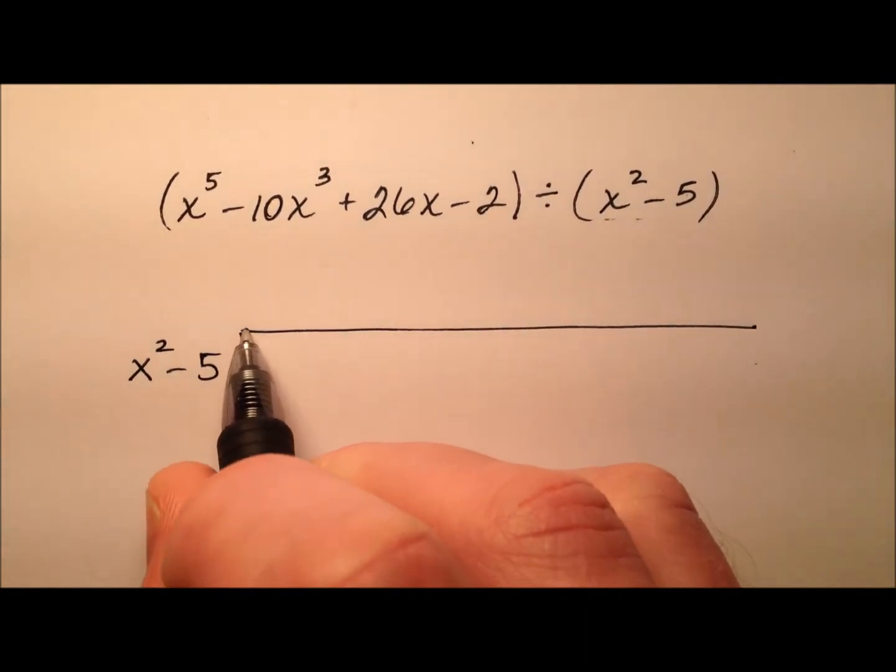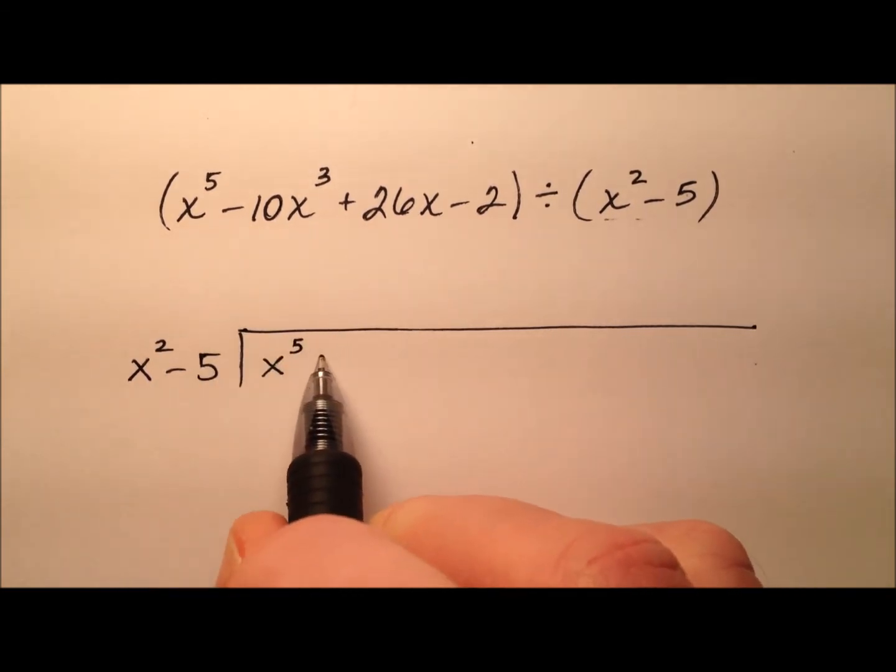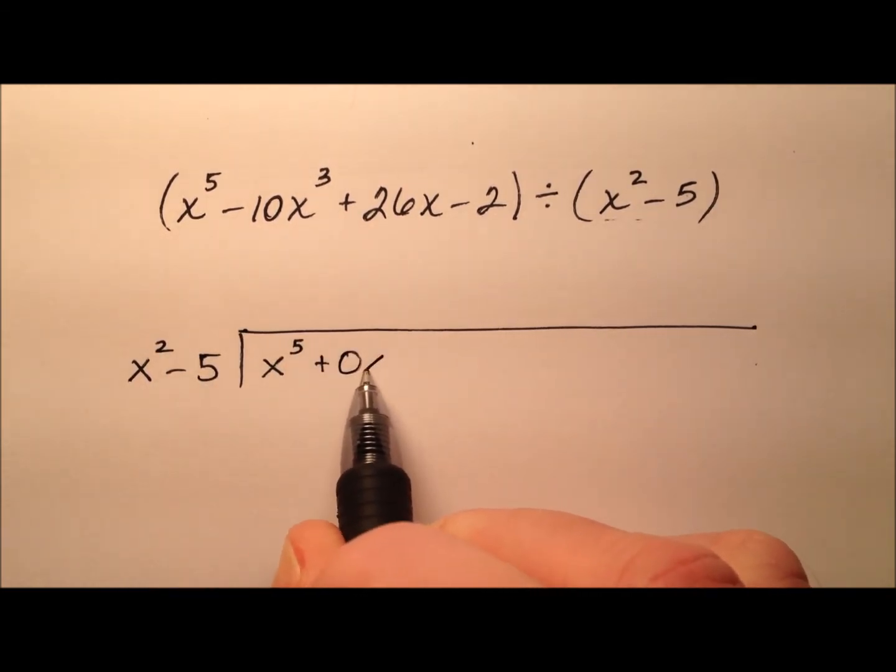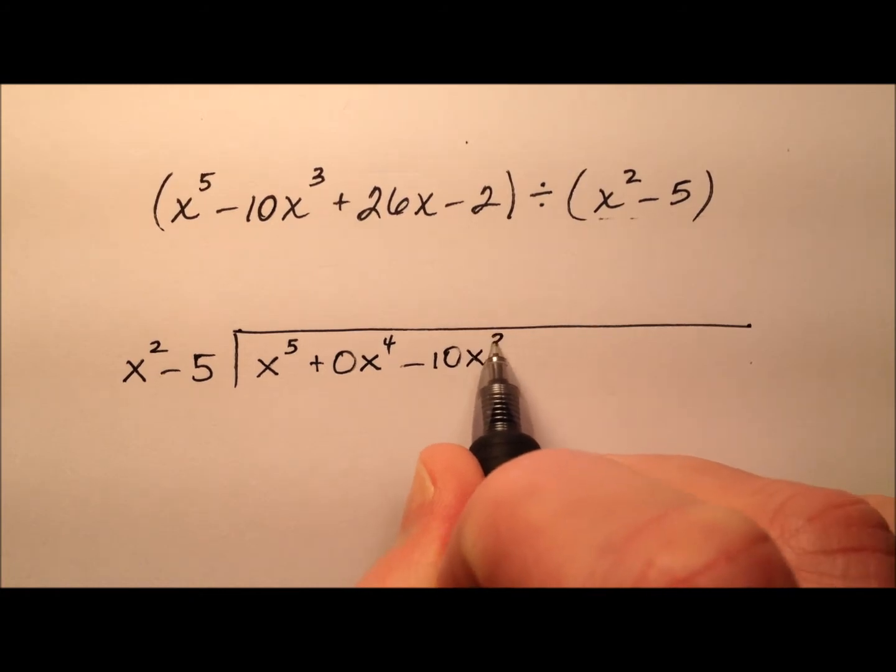And then inside here I start with my x to the fifth term and I don't have an x to the fourth term but I need to accommodate for him so I need to put this zero in as a placeholder and then my cubic term is negative 10x cubed.